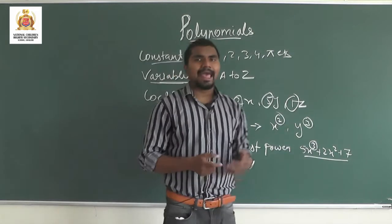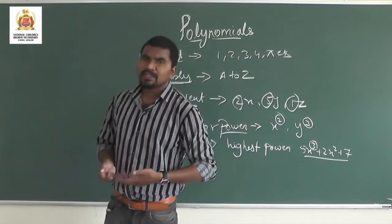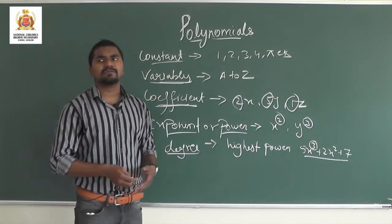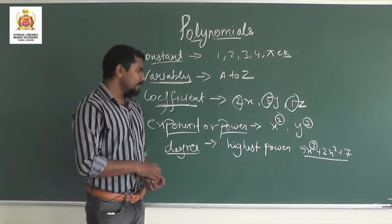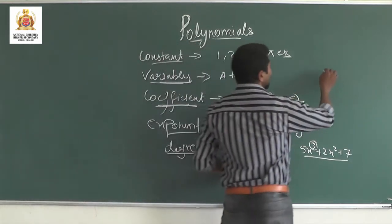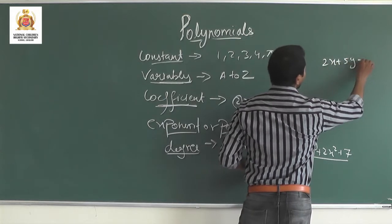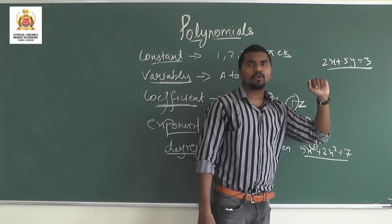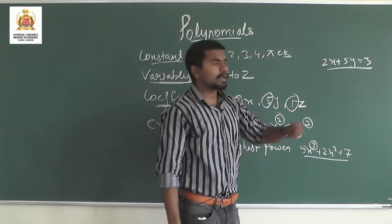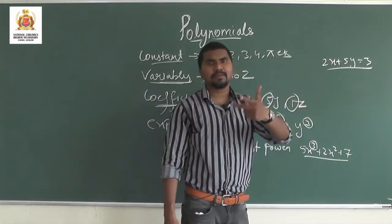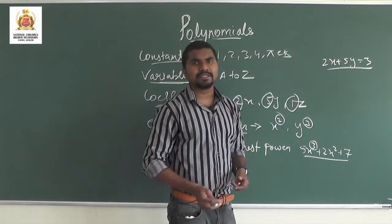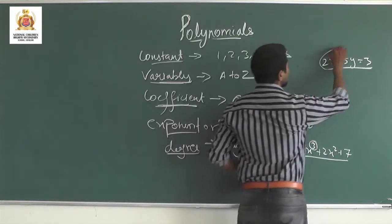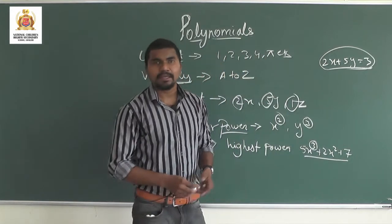I use the word 'algebraic expression' frequently. An algebraic expression is a combination of variables and constants with some operators. For example, 2x + 5y = 3 — here 2, 5, and 3 are constants; x and y are variables; and the operators used are plus, minus, multiplication, division. This combination is what we call an algebraic expression.